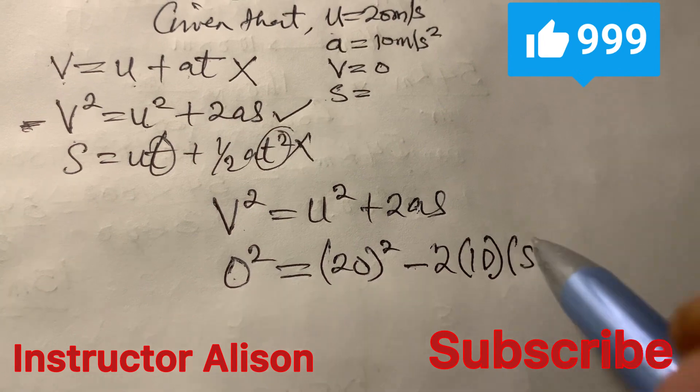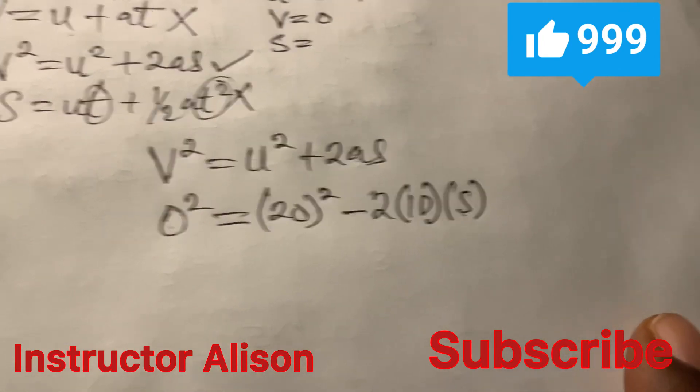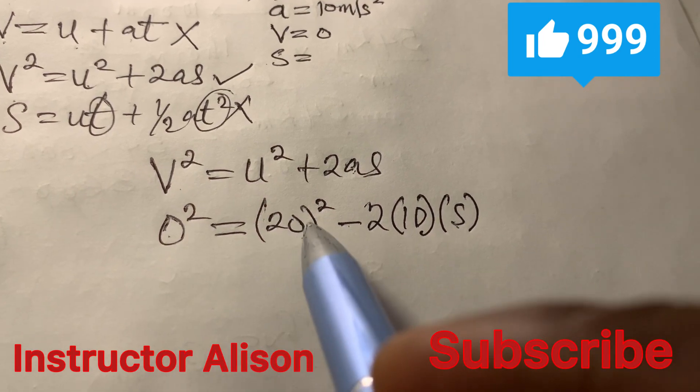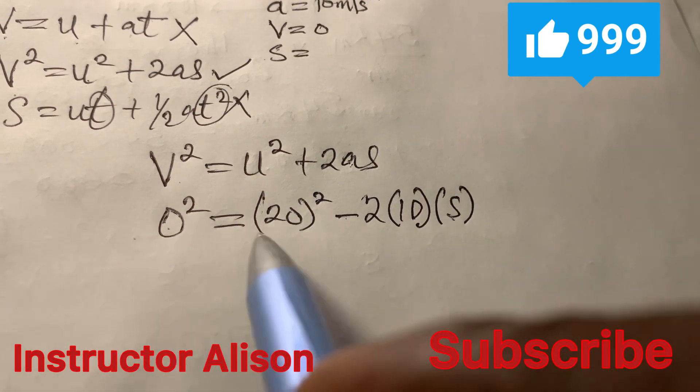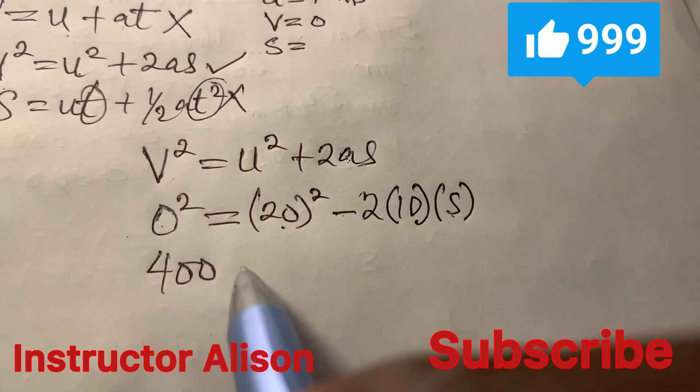At this point if we isolate this, remember that 20 squared will give you 400. So we put in 400 which will change to negative and then we have here to be minus 20S.